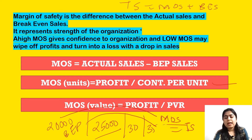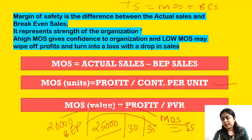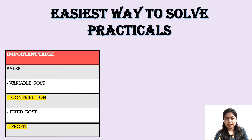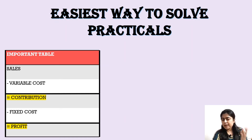To calculate MOS in units, divide profit by contribution per unit. To calculate MOS in value, divide profit by PVR.